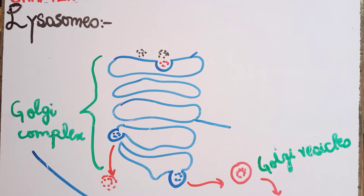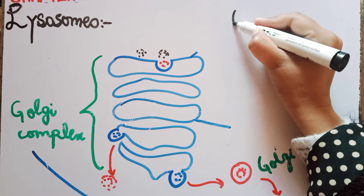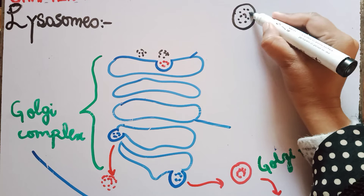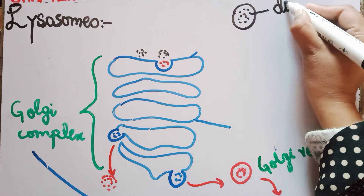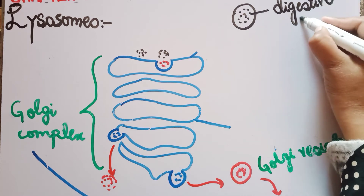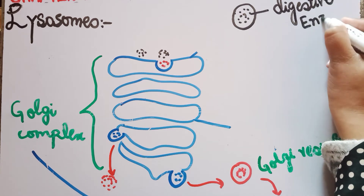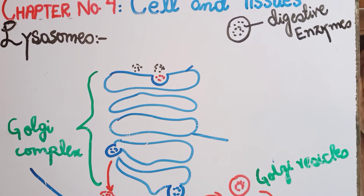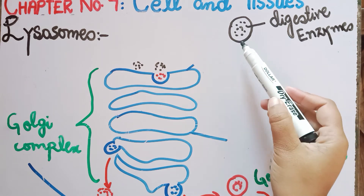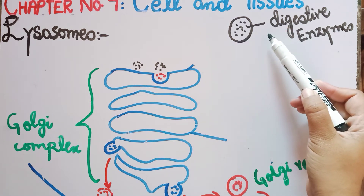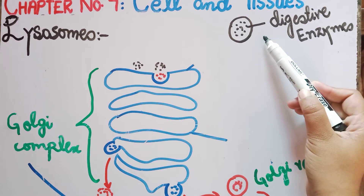These are the single membrane-bounded organelles which contain powerful digestive enzymes and hydrolytic enzymes, so that materials within the cell can be digested. These single membrane-bounded organelles have hydrolytic enzymes — more powerful enzymes — for the digestion of materials within the cell.